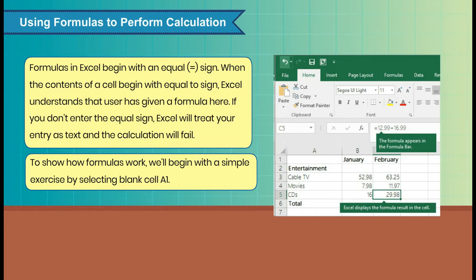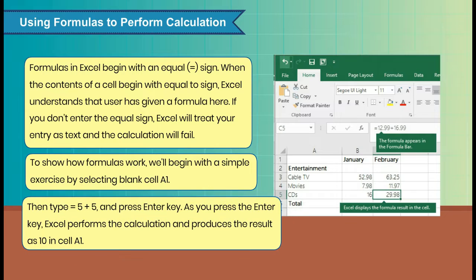To show how formulas work, we'll begin with a simple exercise by selecting blank cell A1. Then type equal to 5 plus 5 and press enter key. As you press the enter key, Excel performs the calculation and produces the result as 10 in cell A1.